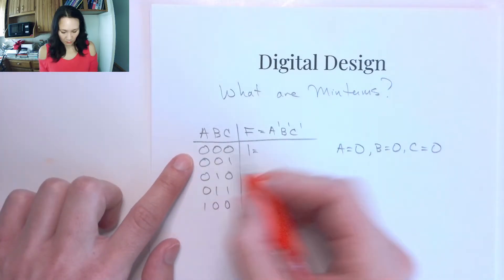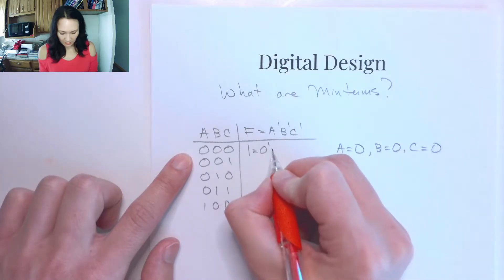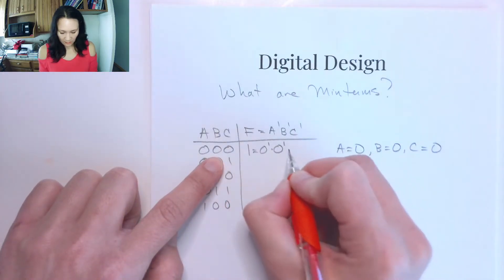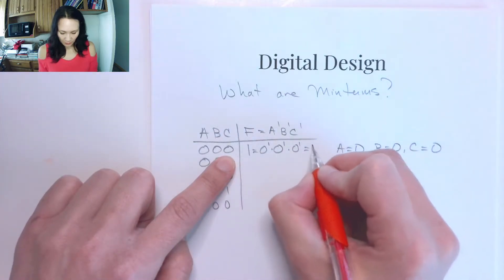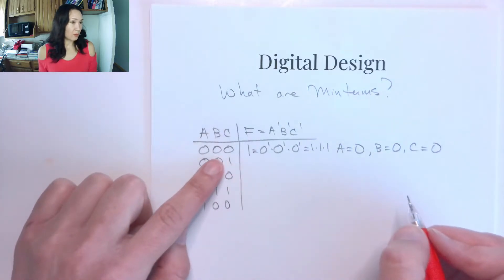that means that if my input is 0, I have a 0 naught anded with B is 0 naught, and C is 0 naught. So this is going to be 1 anded with 1 anded with 1, which gives me a 1.